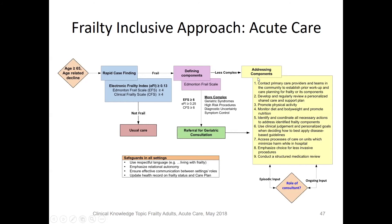A clinical knowledge topic on frailty and acute care was developed in Alberta. It follows a pattern of case finding, defining components, and addressing components — all operationalized and built into an order set on Connect Care titled 'Frailty.' The Edmonton Frail Scale and Clinical Frailty Scale are both available, and one day we hope to have the Electronic Frailty Index built into our system. When frailty is identified, decision tools built into our electronic medical system can prompt consideration of further steps such as following the frailty order set or referral to geriatrics.